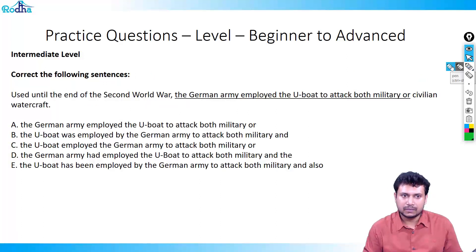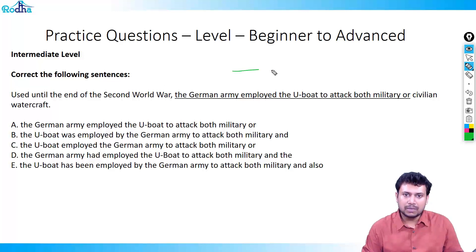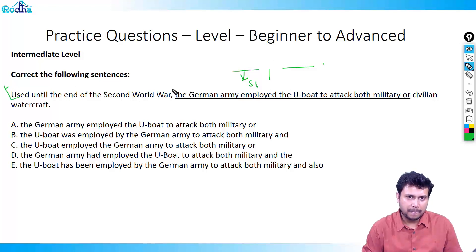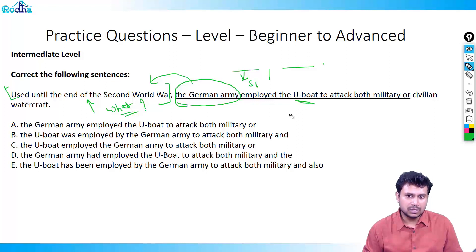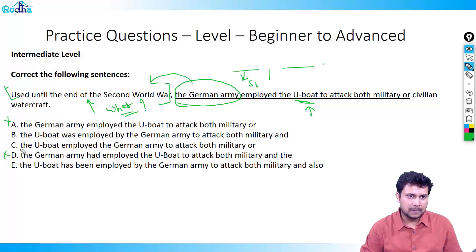Next question: 'Until the end of the Second World War, the German army employed the U-boat to attack both military or civilian watercraft.' This is a dangling modifier — what was used until the Second World War? The first noun phrase says the German army, but it is the U-boats being used, not the army. So 'U-boat' must come right after the comma. That eliminates options A and E, leaving B, C, and D.